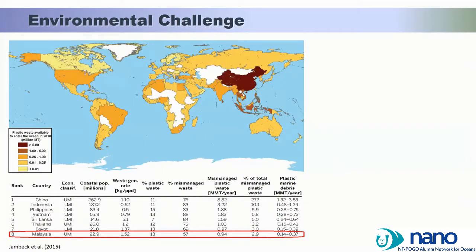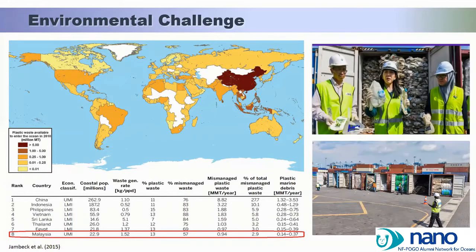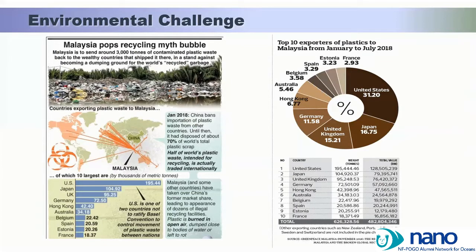In 2015, one publication reported that Malaysia has been estimated as a top eight mismanaged plastic waste country. Other than our own mismanaged plastic waste, we also receive large amounts of imported plastic waste from other countries. In 2018, since China banned the import of plastic waste, Malaysia became one of the main receivers. We received 150 shipping containers carrying about 3,000 tons of recycled trash, which has contributed even worse to the microplastic waste situation in Malaysia.